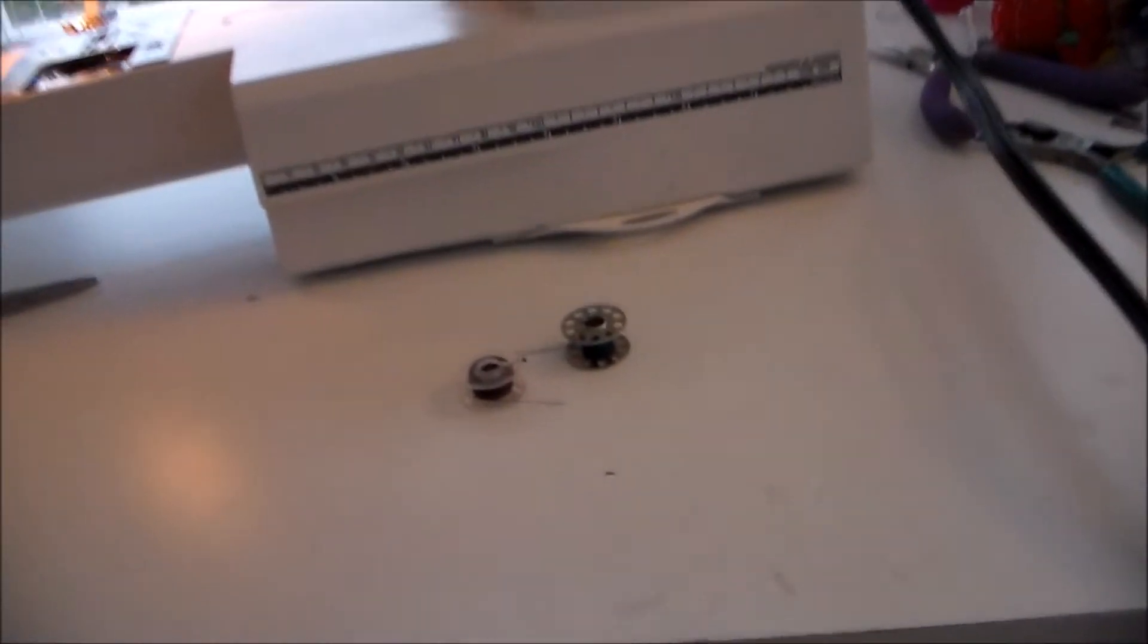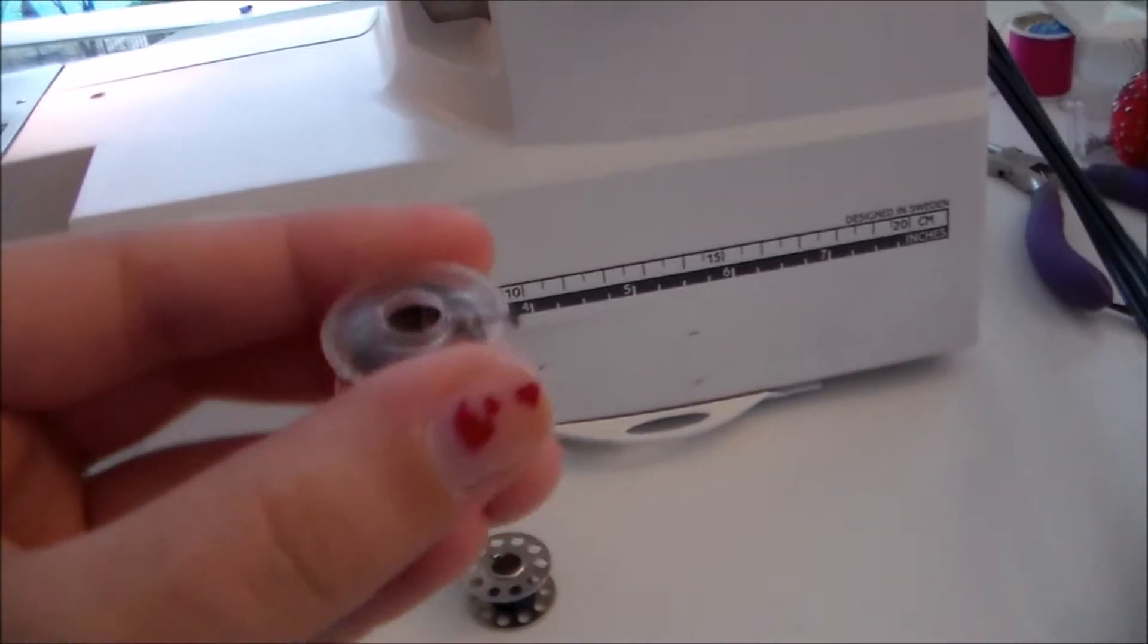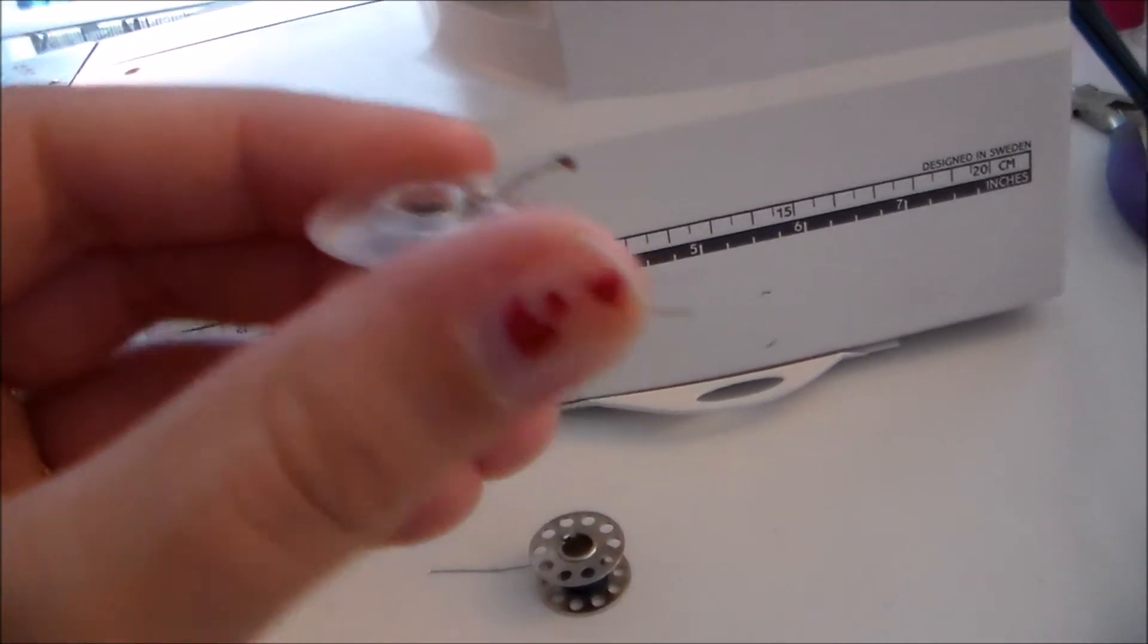So we're going to take our little bobbin from earlier. Now if you have a bobbin like this one where it still has some thread poking out of the top you can go ahead and trim that off.